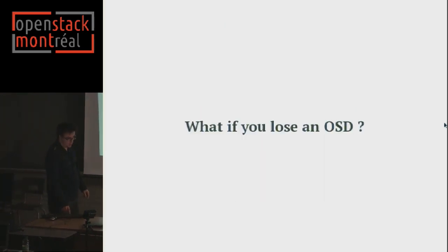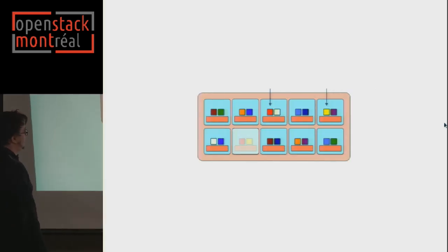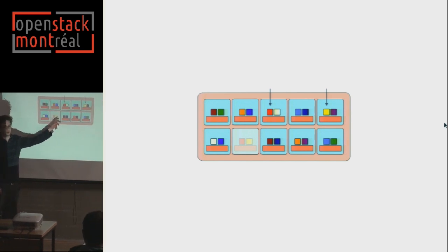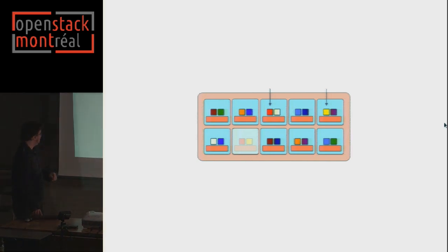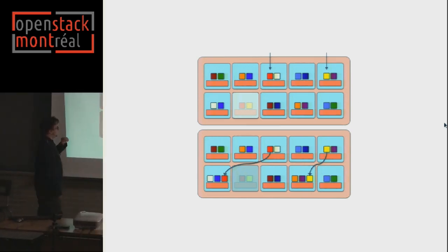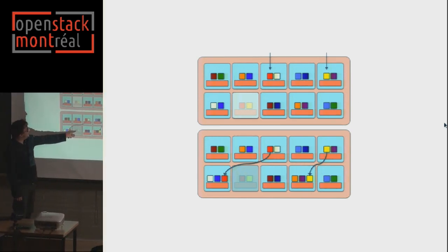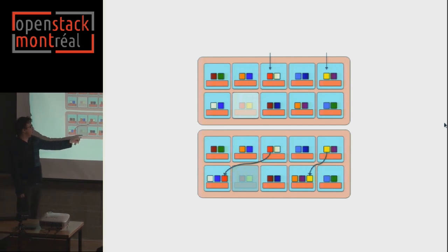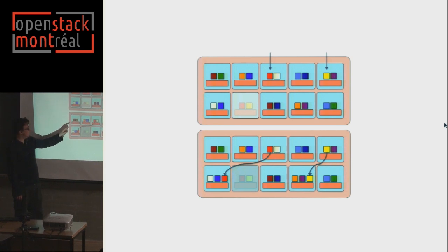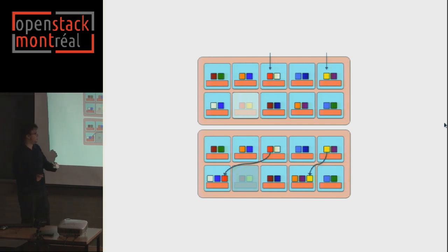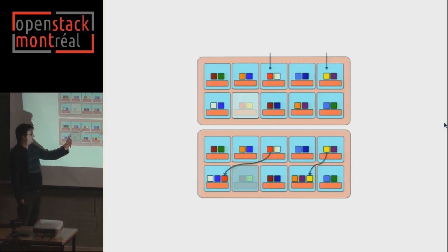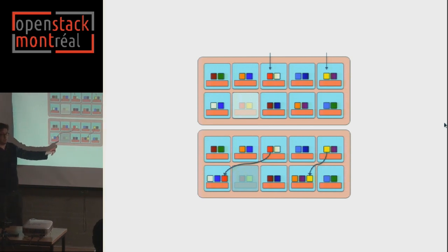What happens if you lose an OSD? You lose some placement groups. This is oversimplified, but essentially the state of the pool becomes degraded — some files aren't replicated and consistent. The OSDs will then peer between themselves and replicate the data into other placement groups to restore consistency.